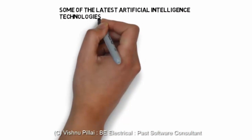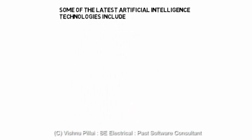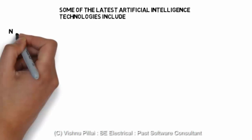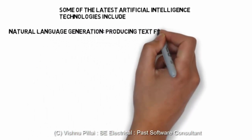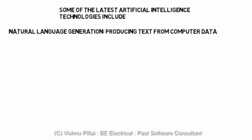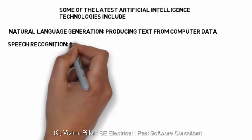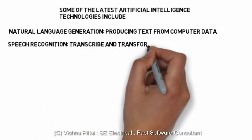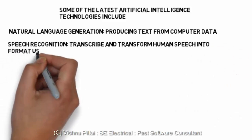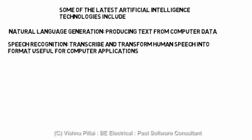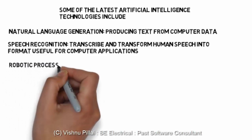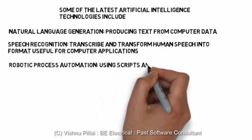Some of the latest Artificial Intelligence technologies: AI has developed from 1950 and has reached 2017. Trending technologies include natural language generation — producing text from computer data — and speech recognition. Voice applications like Siri on iPhone are examples of natural language generation, processing, and speech recognition, which involves transcribing and transforming human speech into formats useful for computer applications.